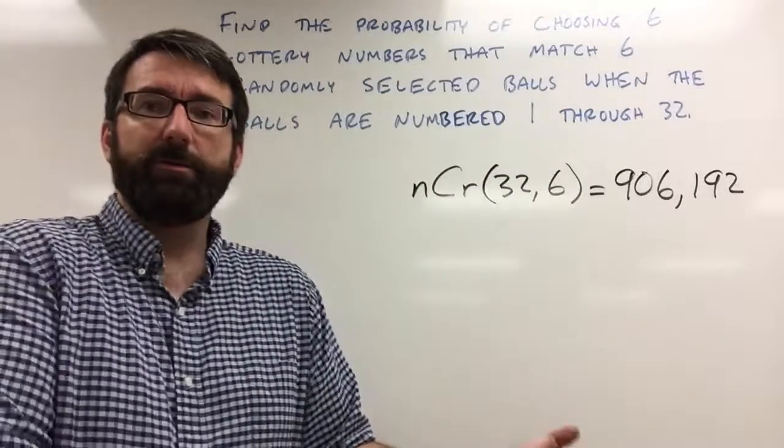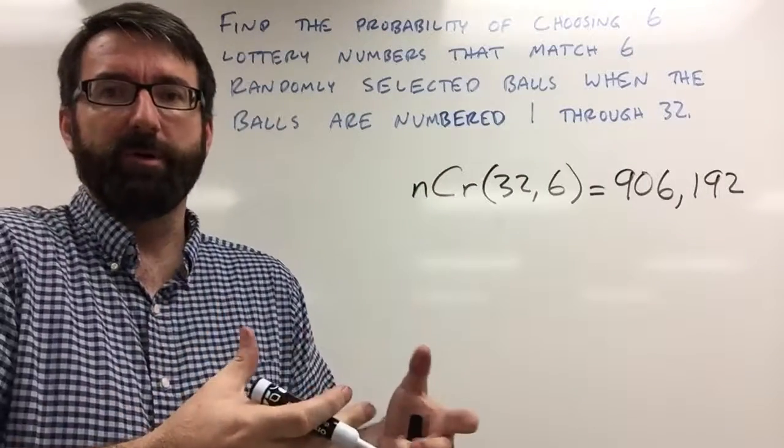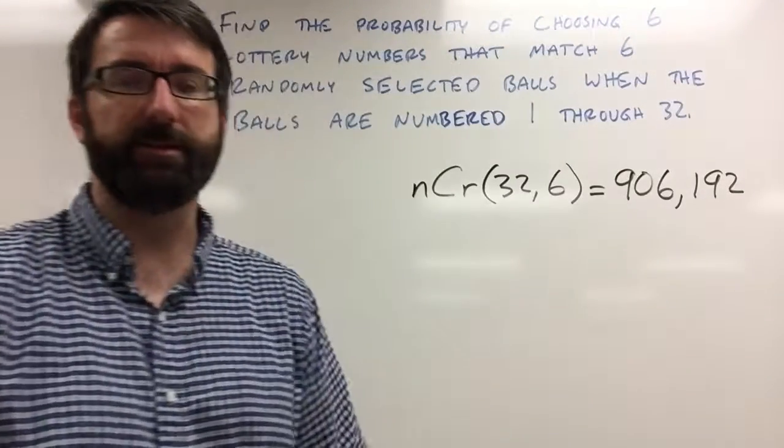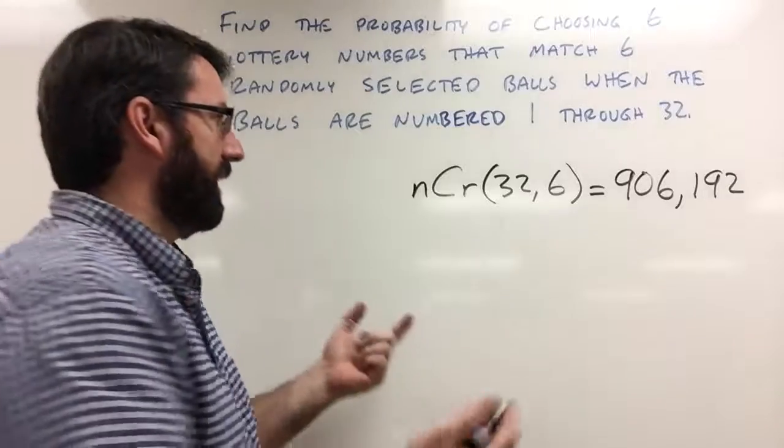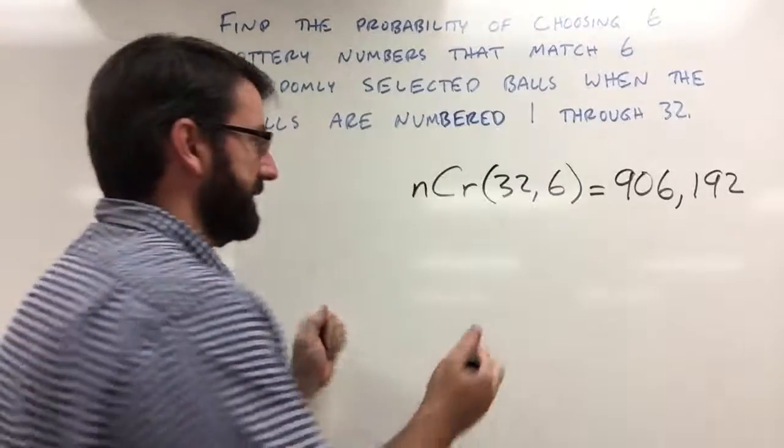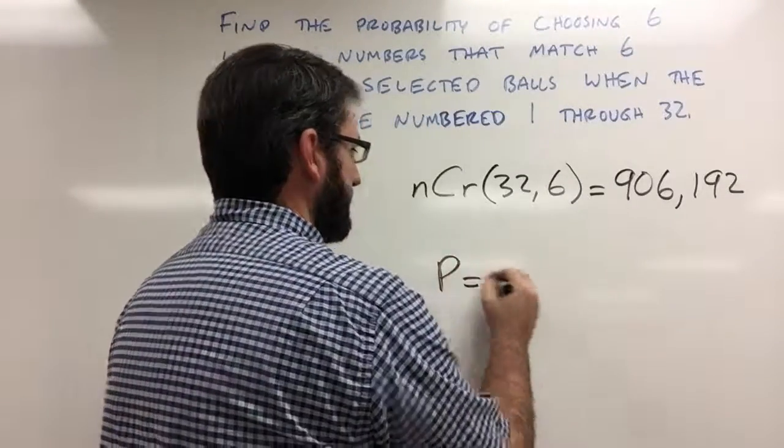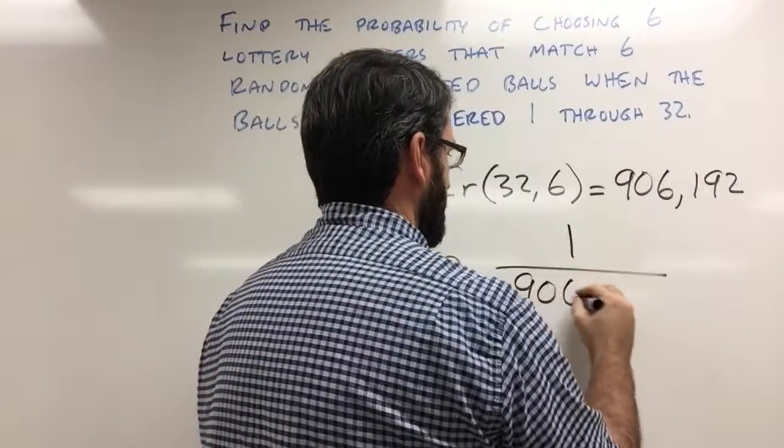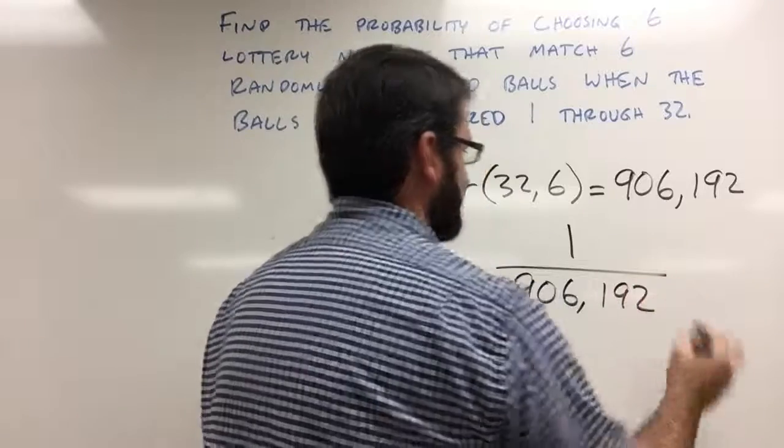Alright, so now what's the probability that our numbers match the numbers that are pulled out of this machine? Well, we only have one lottery ticket so our probability is going to be 1 out of that 906,192.